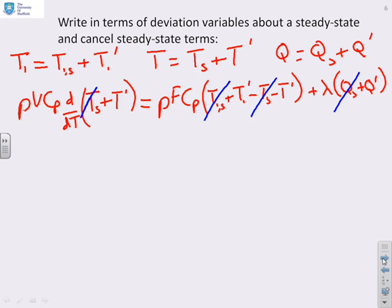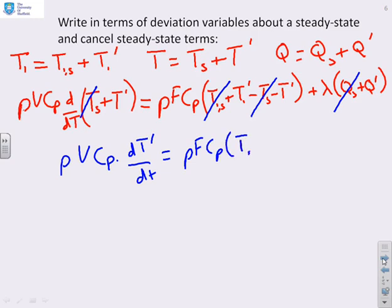And this one goes because the derivative of a steady state is zero. So what do I get left with? ρVCp times dT'/dt equals ρFCp into (T_i' - T') plus λQ'. So now everything is written in deviation variables about a steady state, which makes my life just a little bit easier.